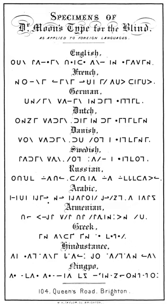The China Library for the Blind in Beijing has several thousand volumes, mostly published by the China Braille Press. The National Taiwan Library has a Braille room with a postal mail service and some electronic documents.